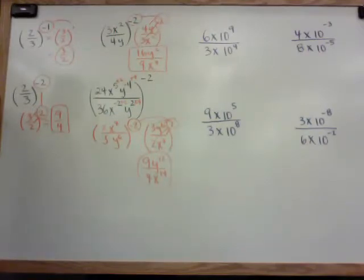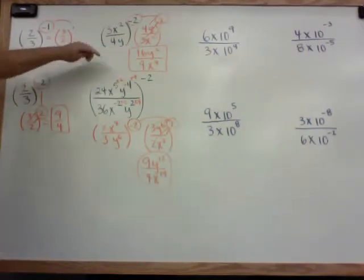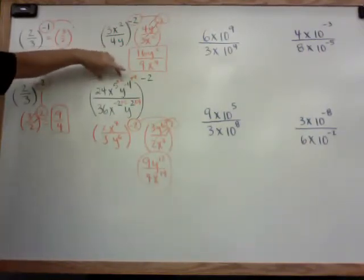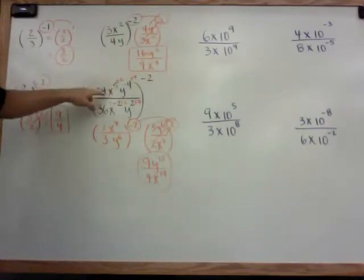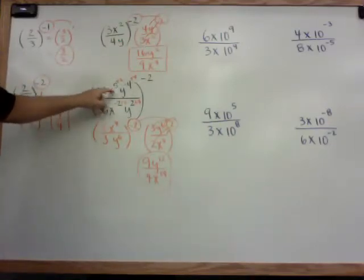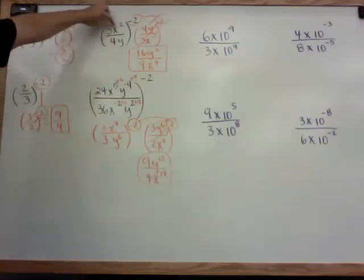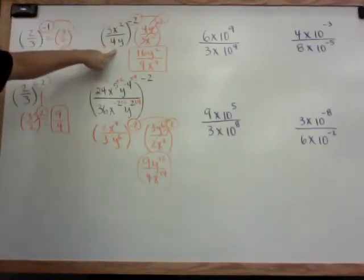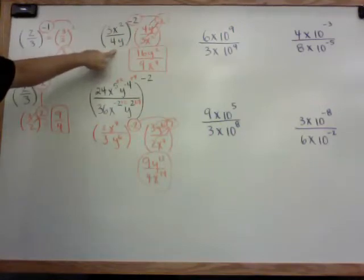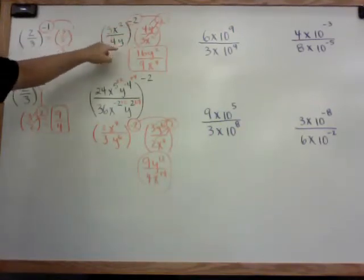So again, simplify the parentheses before you distribute your exponents in. If you have x on top and bottom, simplify. If you have y on top and bottom, simplify. In this case, because I only have x on the top and y on the bottom, there's nothing to simplify — it's already simplified, so I can just distribute it in after I flip it.